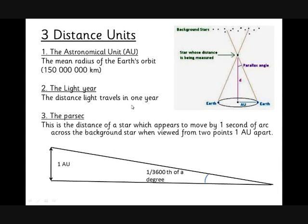First of all, some units. The simplest unit is the astronomical unit, AU, and this is simply the mean radius of the Earth's orbit. We know that to be about 150 million kilometers or 1.5 times 10 to the 11 meters. The second unit you'll probably have come across is the light year, and a light year is simply the distance that light travels in a year. To work that out, you multiply the speed of light by 60, by 60, by 24, by 365 and you'll end up with a distance in meters.